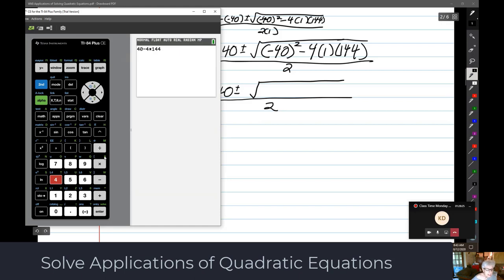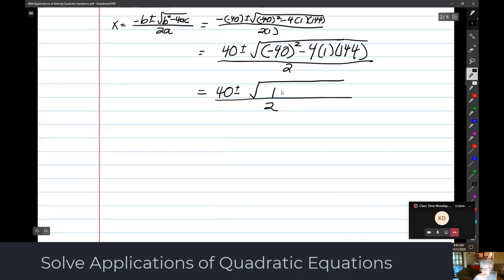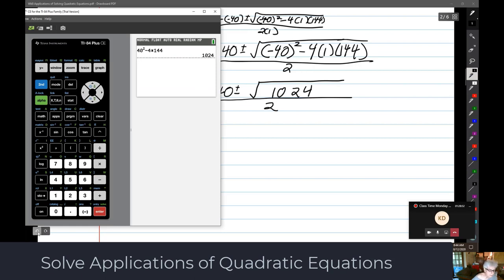Now we're going to take the square root of 1024, which is 32.